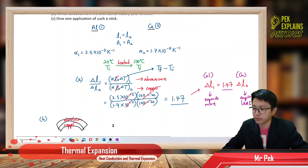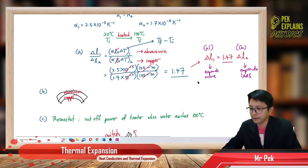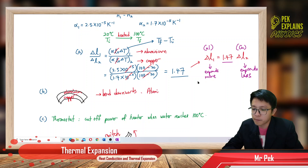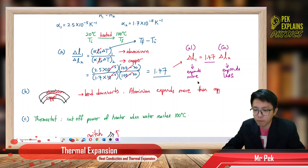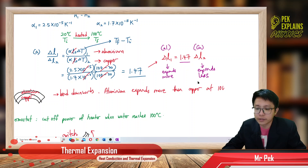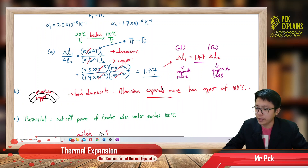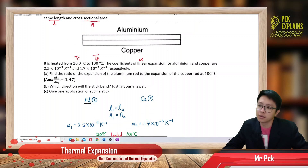The stick bends this way because aluminum expands more. The stick will bend downwards because aluminum expands more than copper at 100 degrees Celsius, as we can see from the ratio being greater than one — aluminum expands more than copper.